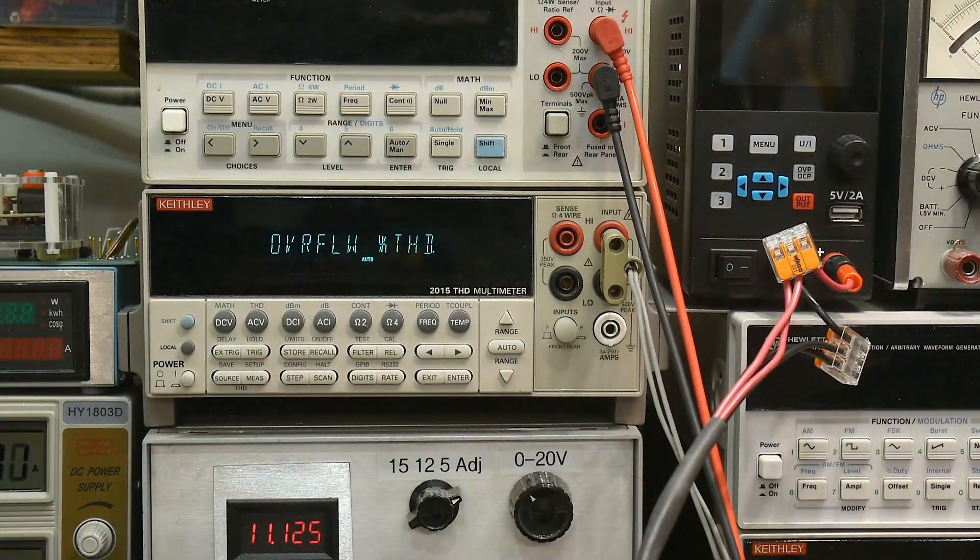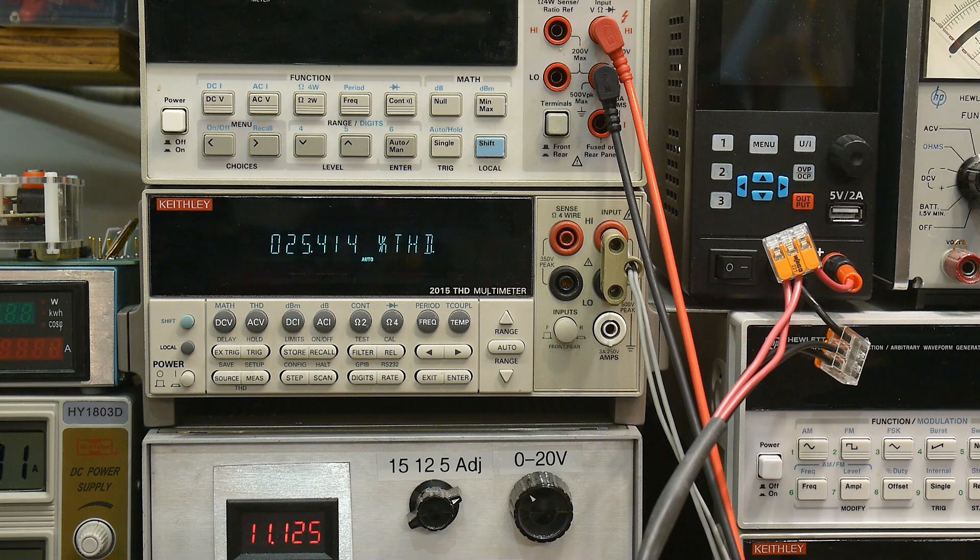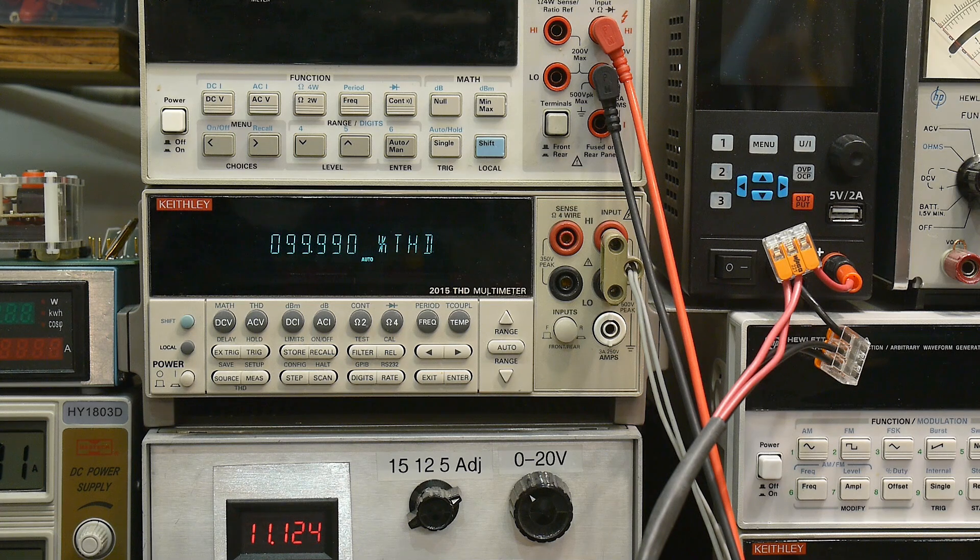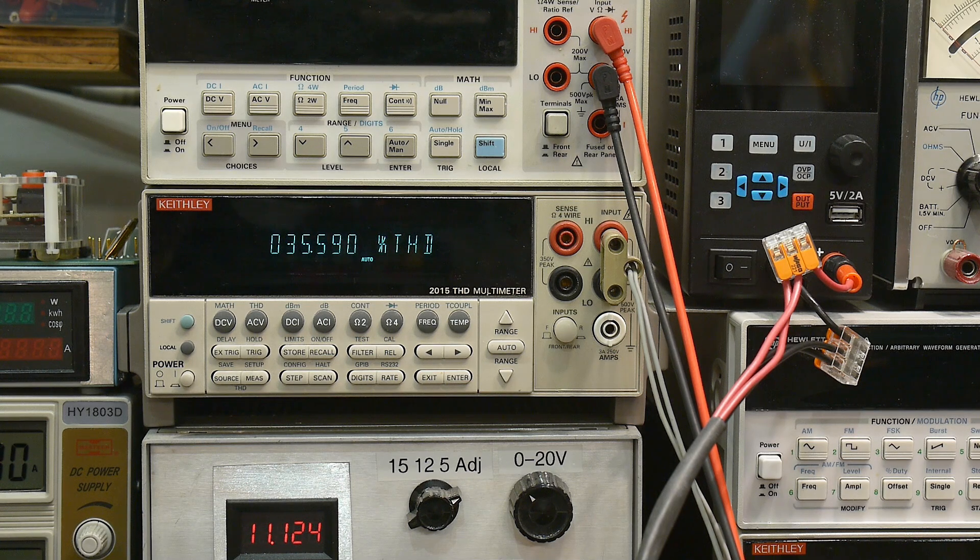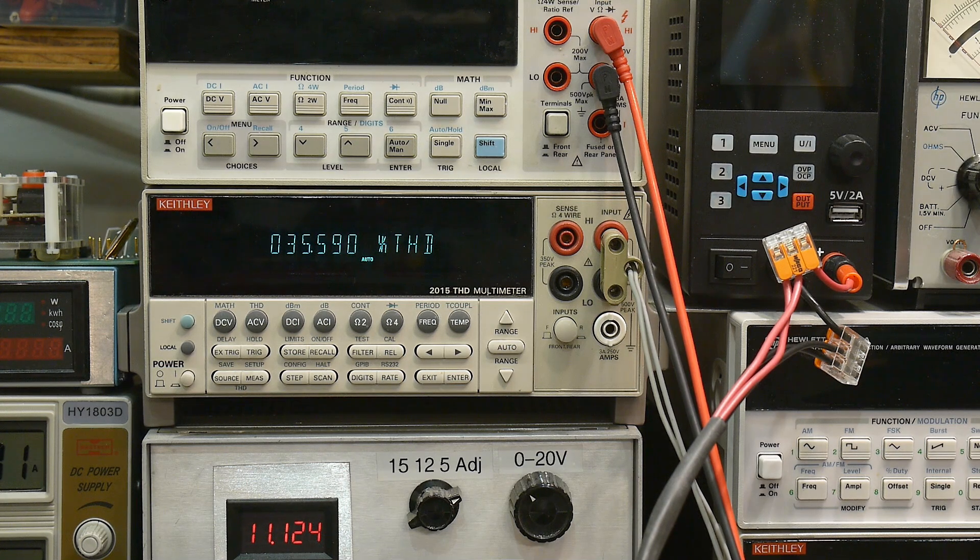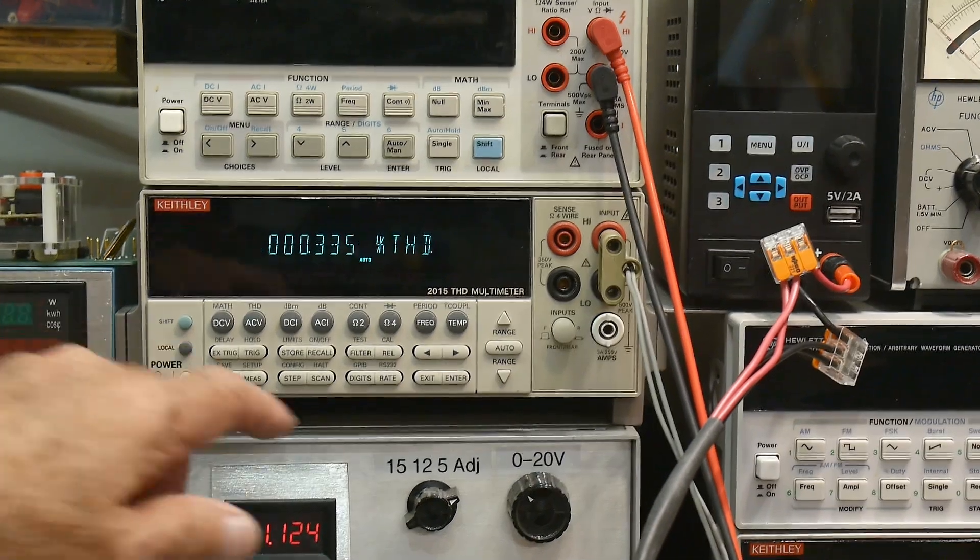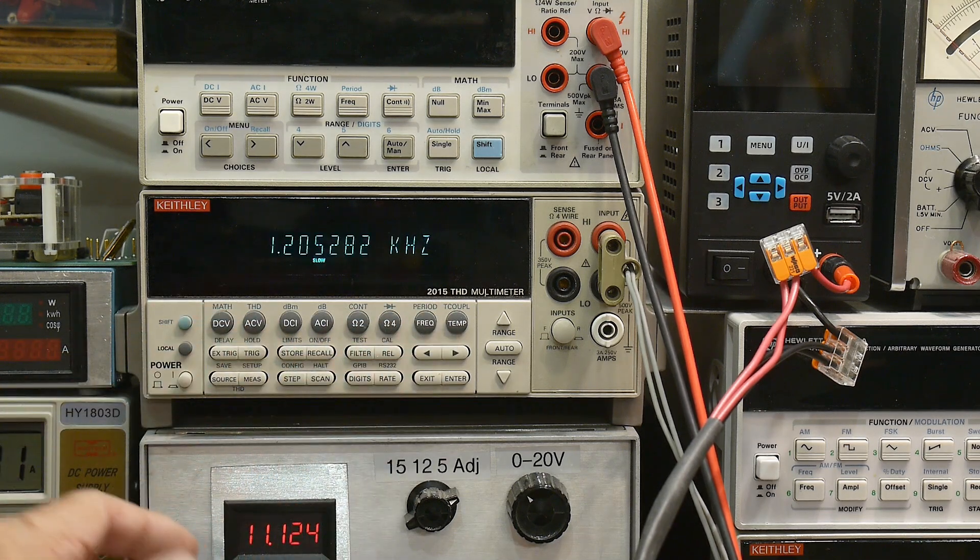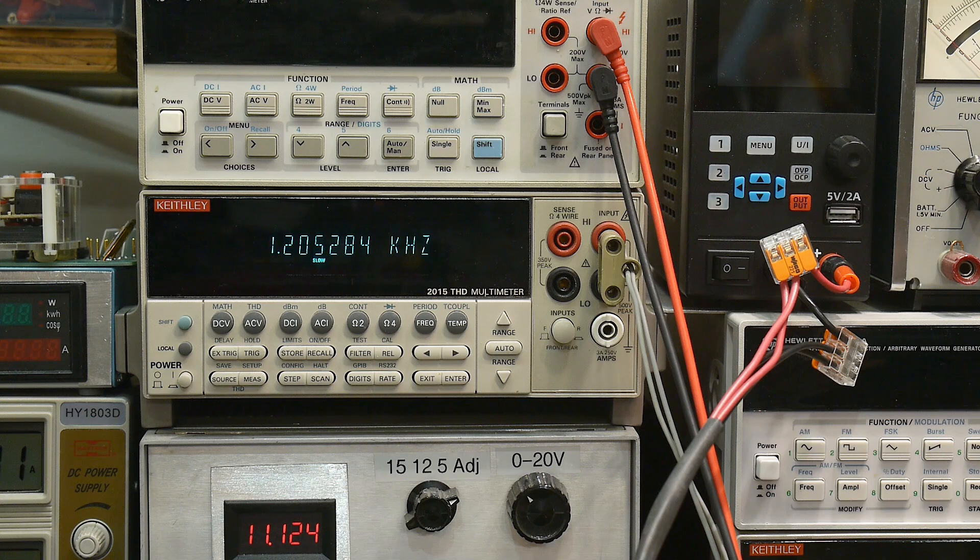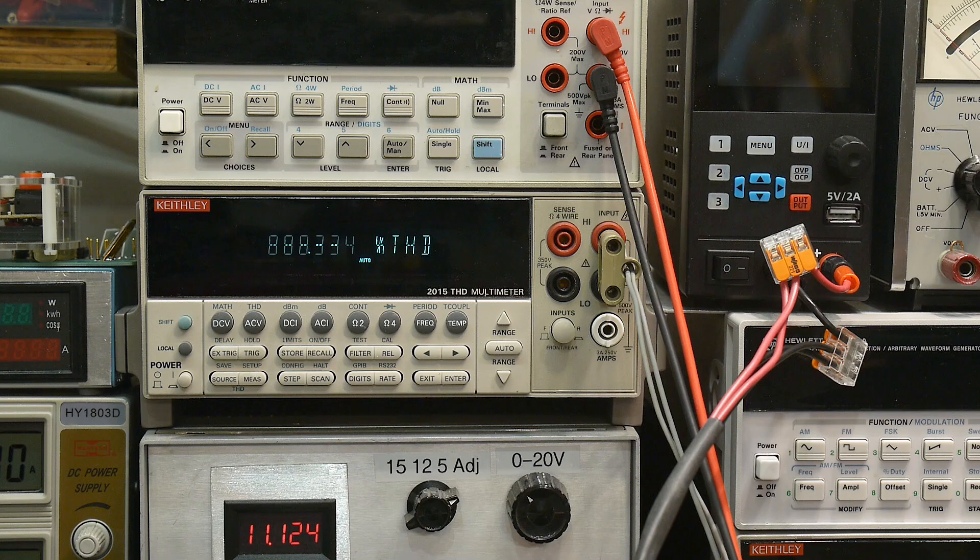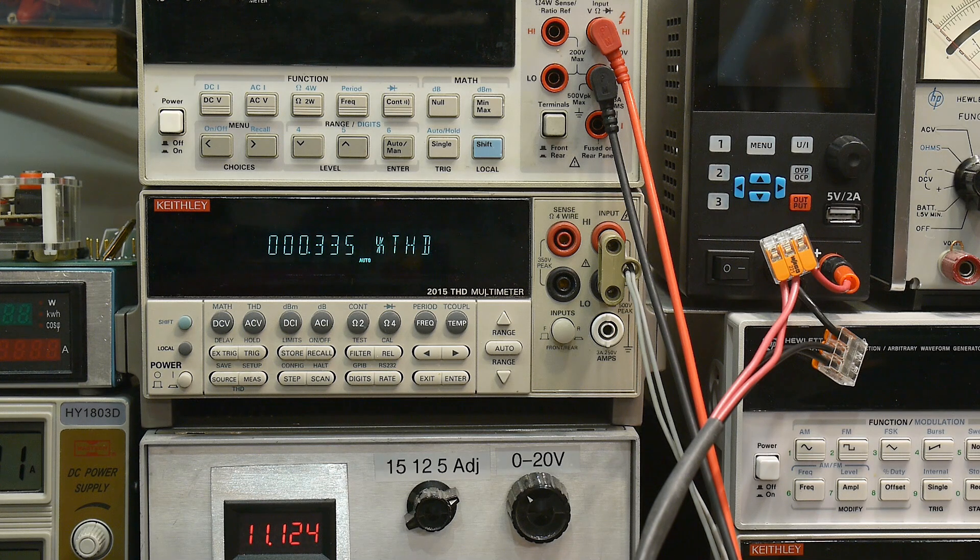The Keithley 2015 will measure what we need it to measure, so let me connect it up here to our oscillator. We can push some buttons up here, we can say what's our frequency, so it's oscillating at 1.2 kilohertz. And then we'll go into total harmonic distortion. It's measuring 0.3%, that's not very low. That is not very low.